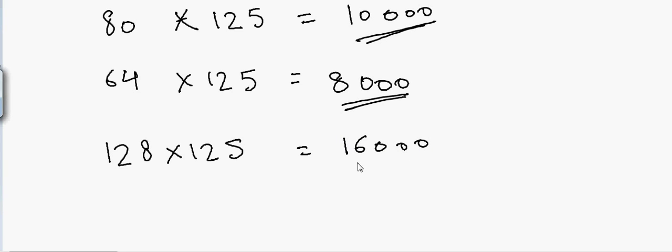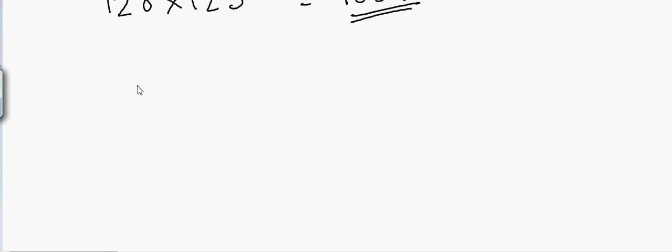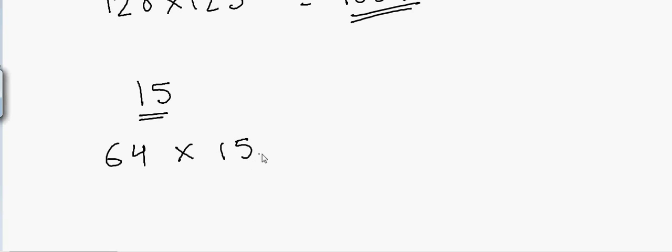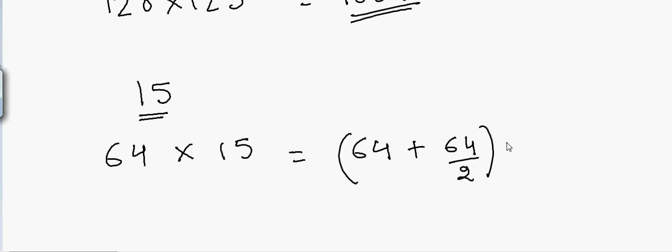Now let's go to multiplication by 15. This one is a little different. Suppose we have 64 and want to multiply it by 15. What I will do is take 64, add 64 divided by 2 to it, and then multiply by 10. So that will be 64 plus 32, times 10, which equals 960.